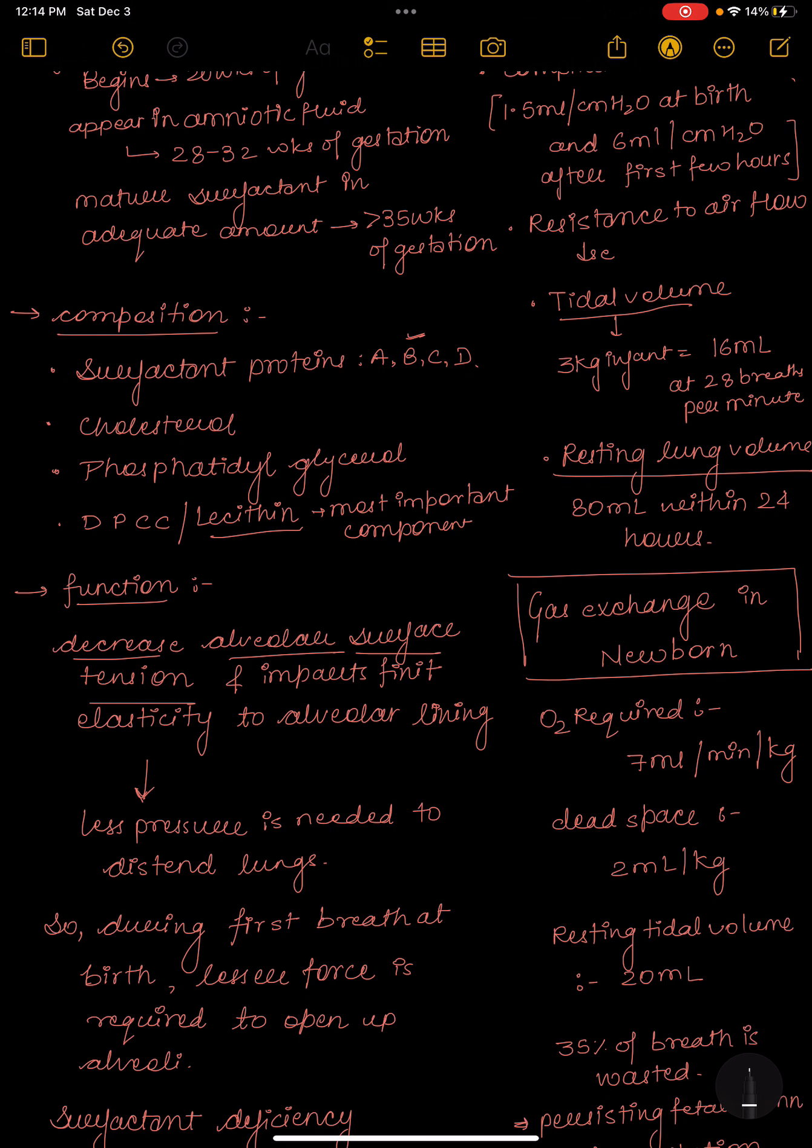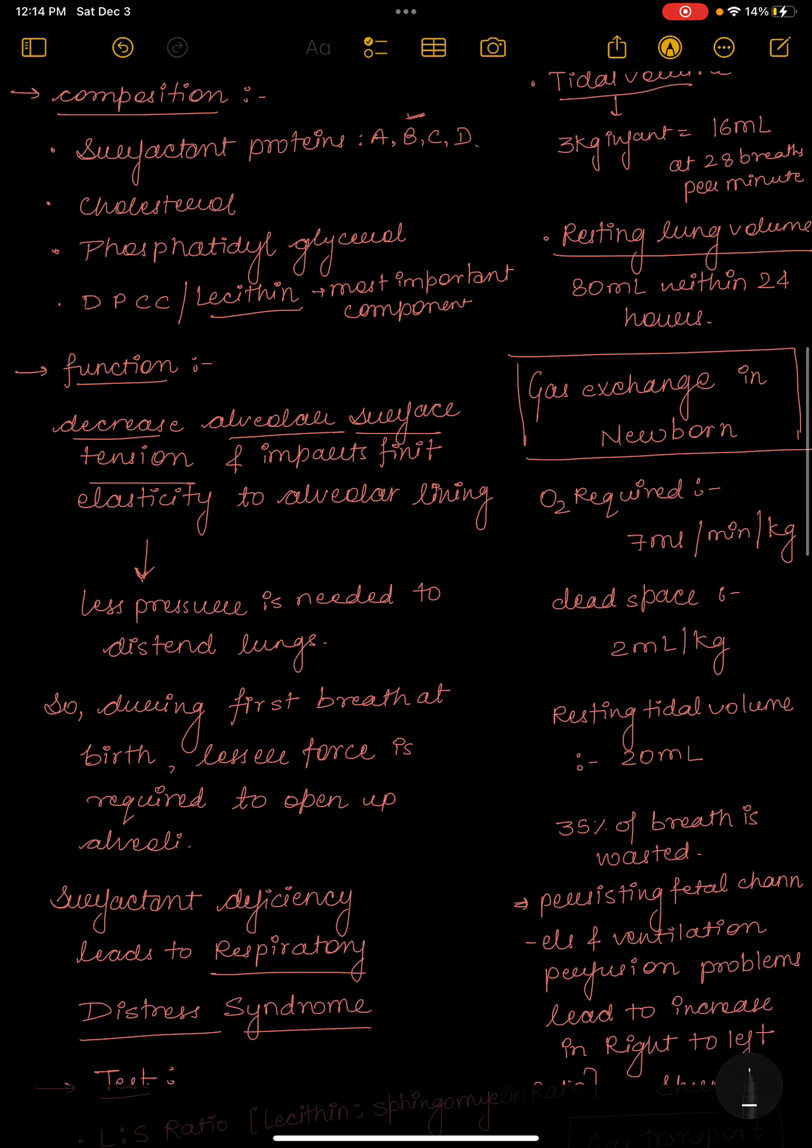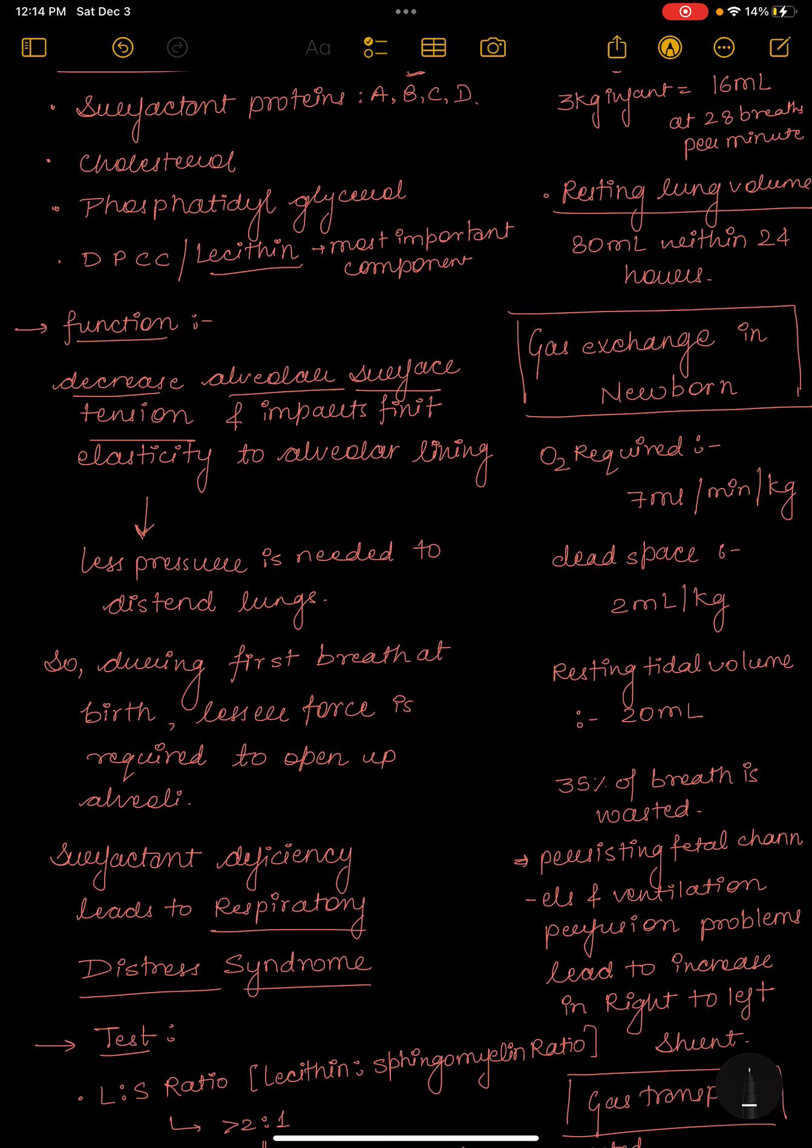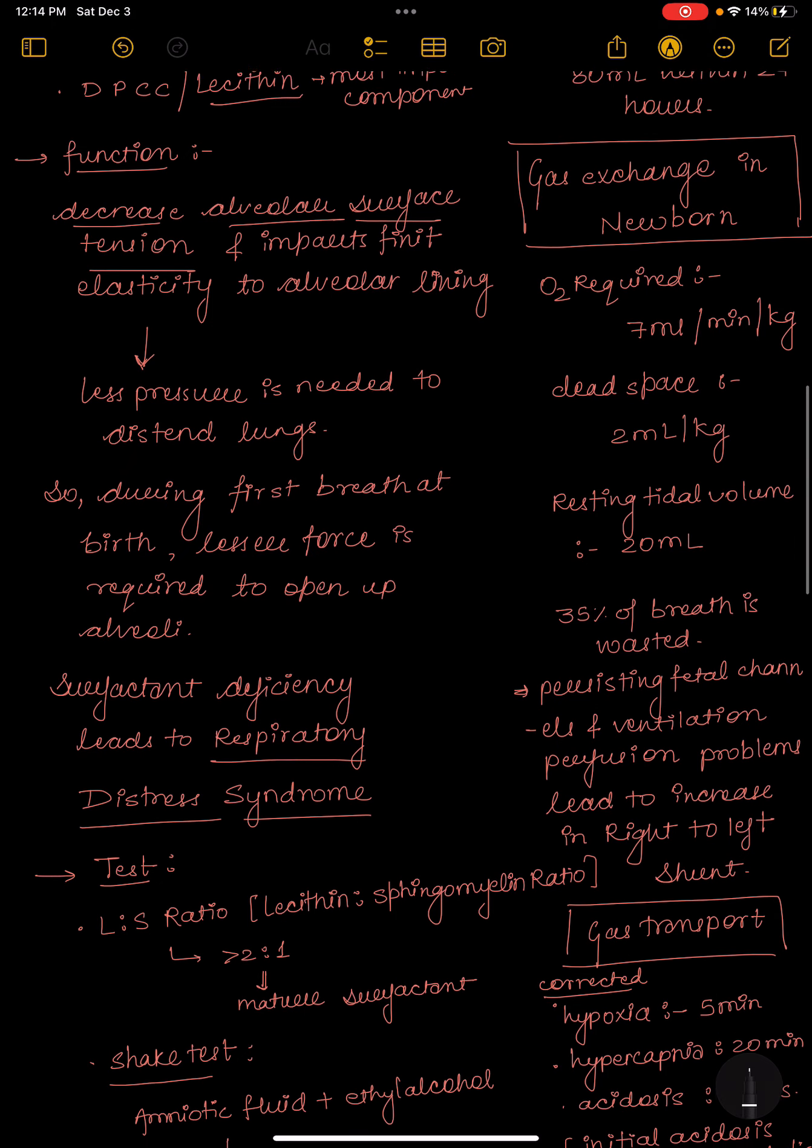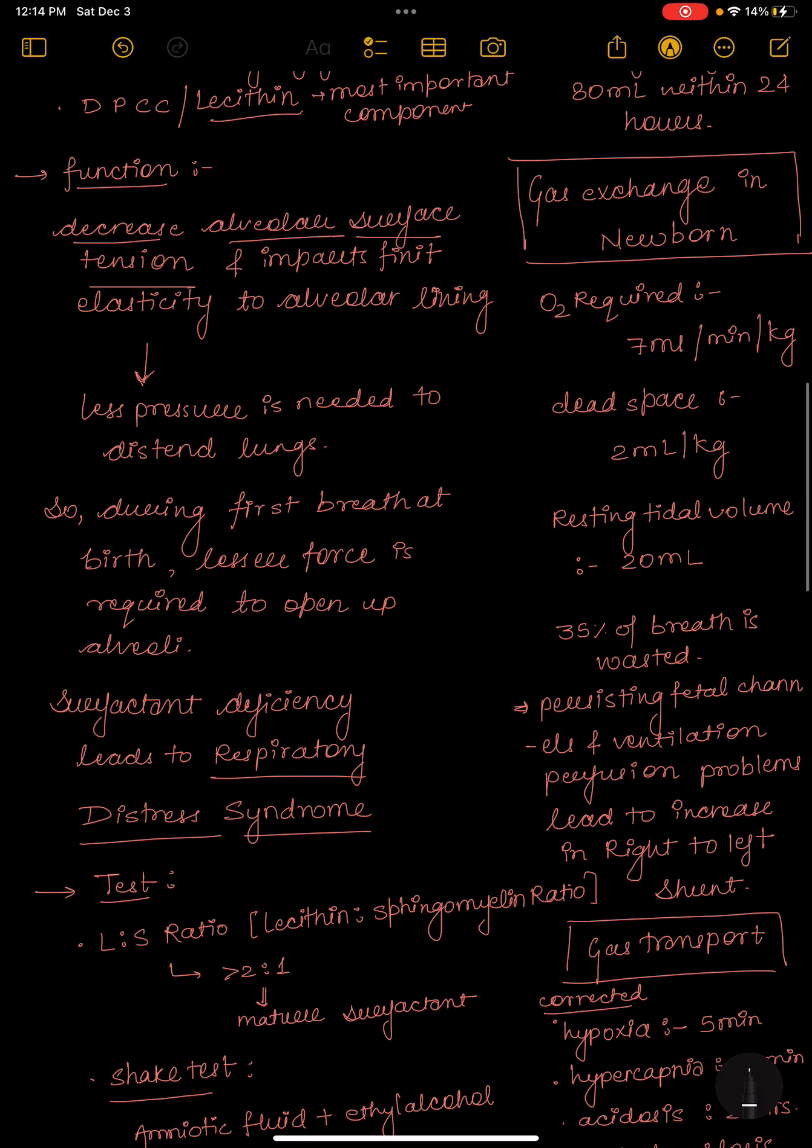What is the function of surfactant? Surfactant is responsible to decrease the alveolar surface tension and imparts finite elasticity to alveolar lining. Less pressure is needed as the alveolar surface tension is decreased.